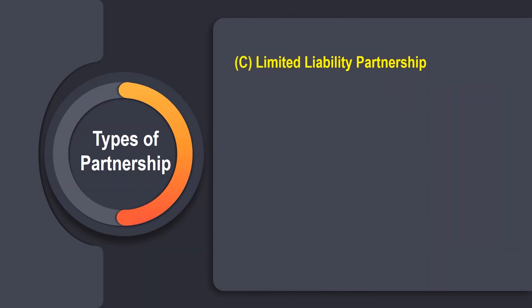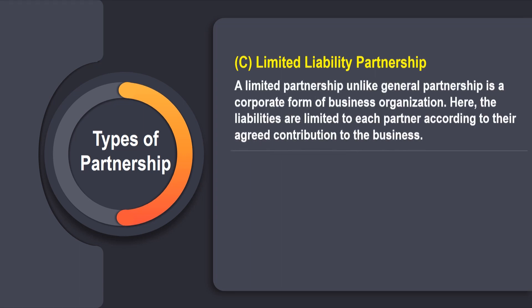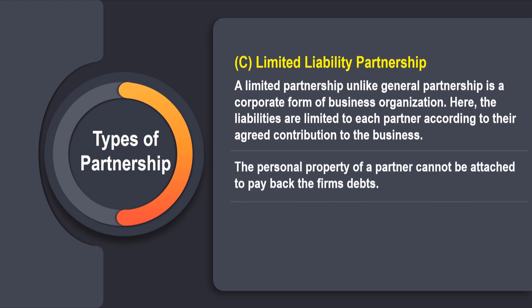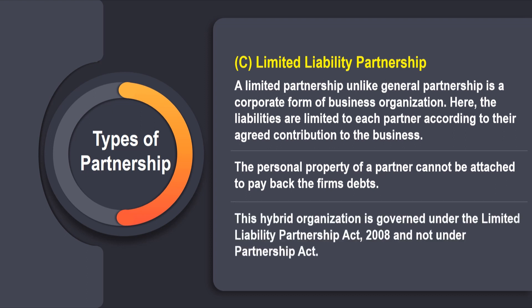The third type of partnership is the limited liability partnership, commonly known as the LLP. Unlike a general partnership, an LLP is a corporate form of business organization. Here, liabilities are limited to each partner according to their agreed contribution to the business, and the personal property of a partner cannot be attached to pay back the firm's debts. This hybrid organization is governed under the Limited Liability Partnership Act 2008 and not under the Partnership Act.